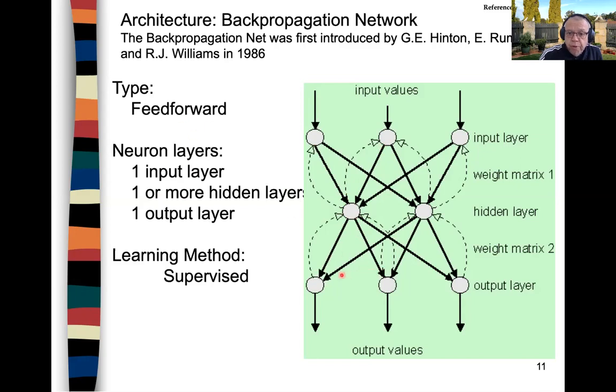With backpropagation, you compute the error between the desired output and the actual output produced by this input pattern. This error is fed back and used to adjust the weights at the input of the nodes.